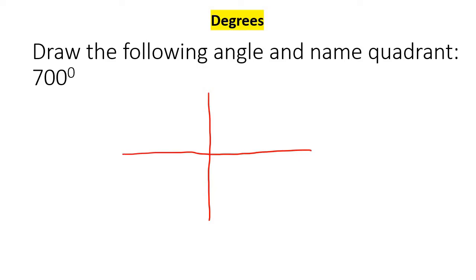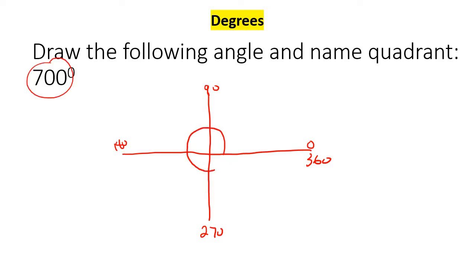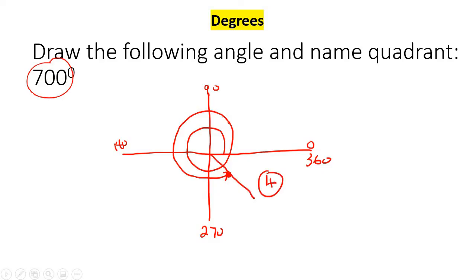Here's a nice one: 700. Because 700 does not fit on the diagram, what you do is go once all the way around — and we go that way because it's positive. Going all the way around once is 360, then up to here would be 450, up to here would be 540, up to here would be 630, and then 700 would be another 70 degrees further. If you went all the way around to here again, that would be 720, so we stop there and draw a line. We are in quadrant number 4. That's how you handle angles larger than 360.